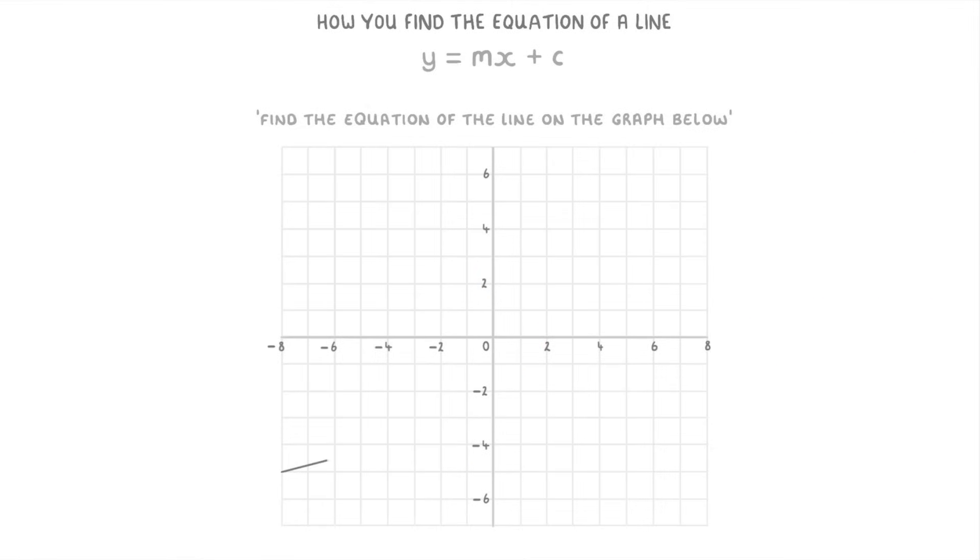Before we finish, let's try the same thing for this one. The first thing you want to do with all of these questions is write out y equals mx plus c, because that's the general format that we're going to try and put our equation into. Then to find c, we need to look for the y-intercept, which is down here at negative 3, so you know that c is negative 3.